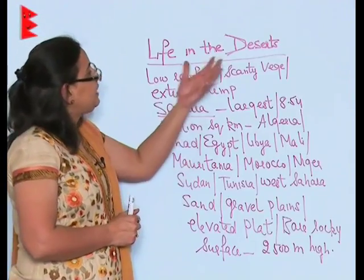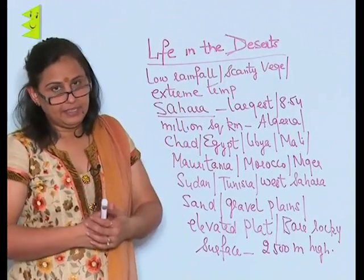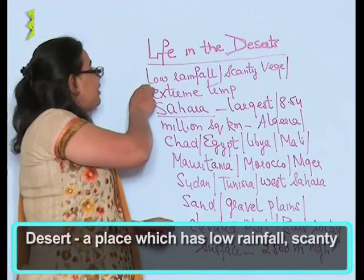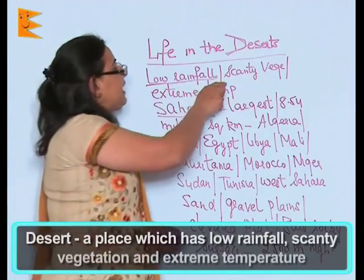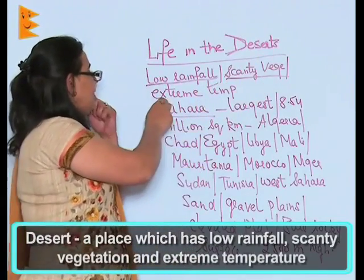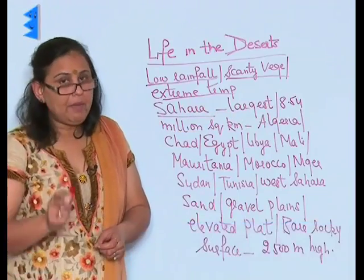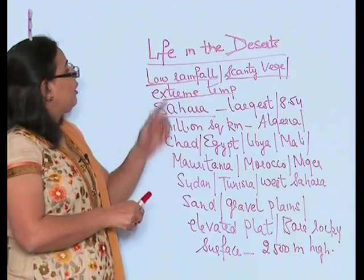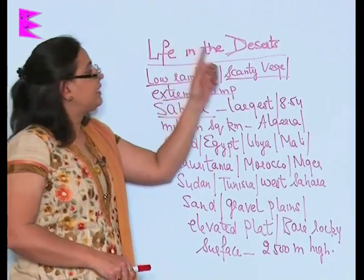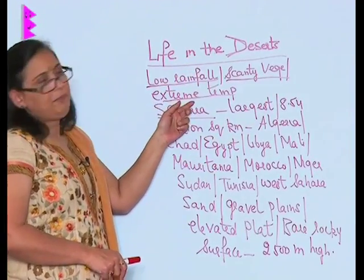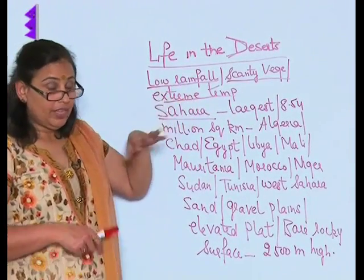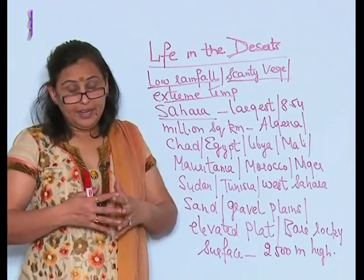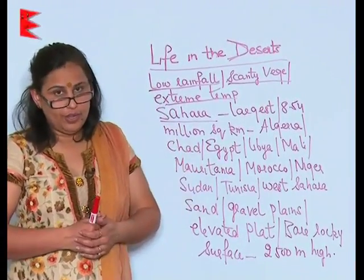A desert is a place which has low rainfall, scanty vegetation, and extreme temperature. Just remember there are three characteristics of a desert: low rainfall, scanty vegetation, and extreme temperature. Extreme temperature need not necessarily be hot — it can be cold also.